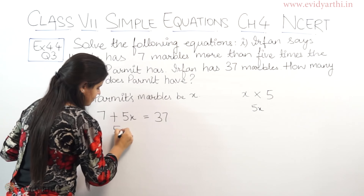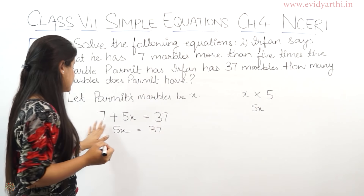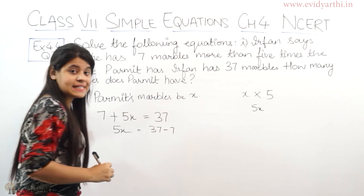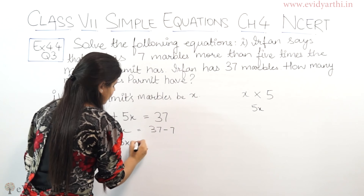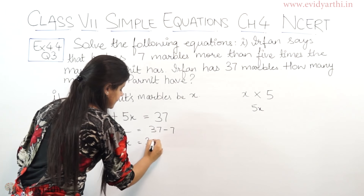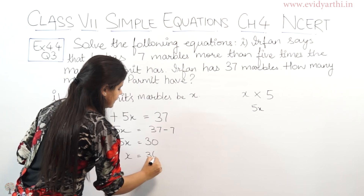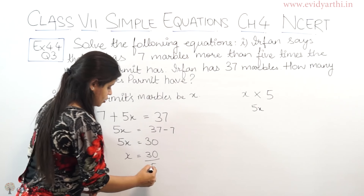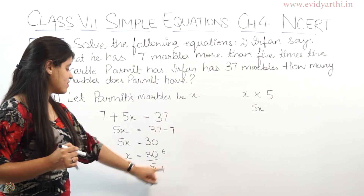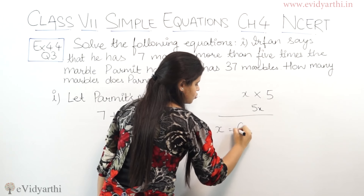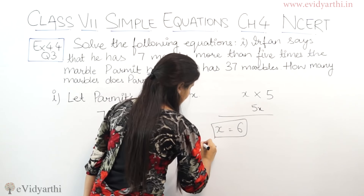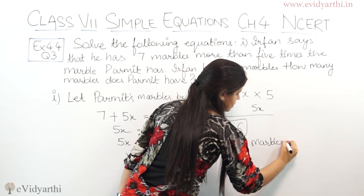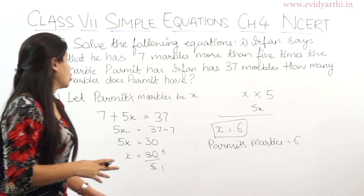Now, 5x equals to 37 minus 7, which is 30. So x equals to 30 divided by 5, because x was multiplied by 5 so it will divide. 5 sixes are 30, so x equals to 6. Therefore, Parmit's marbles equals to 6 — Parmit has 6 marbles.